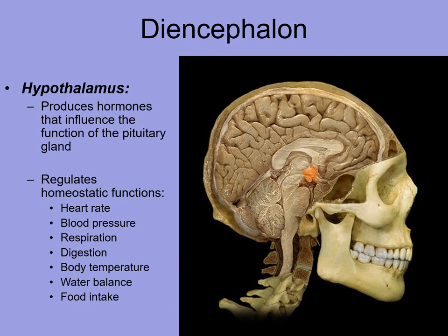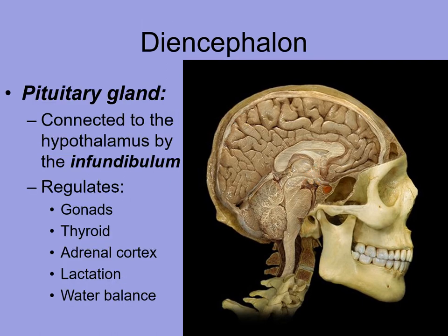The hypothalamus is also part of the diencephalon, and it is involved not only with the brain but with the endocrine system as well. It produces hormones that will then be stored in the pituitary gland. The hypothalamus is very important in helping to maintain homeostasis — keeping that internal balance necessary for survival — regulating things such as heart rate, blood pressure, body temperature, and water balance. In some ways it is like a control center for the brain.